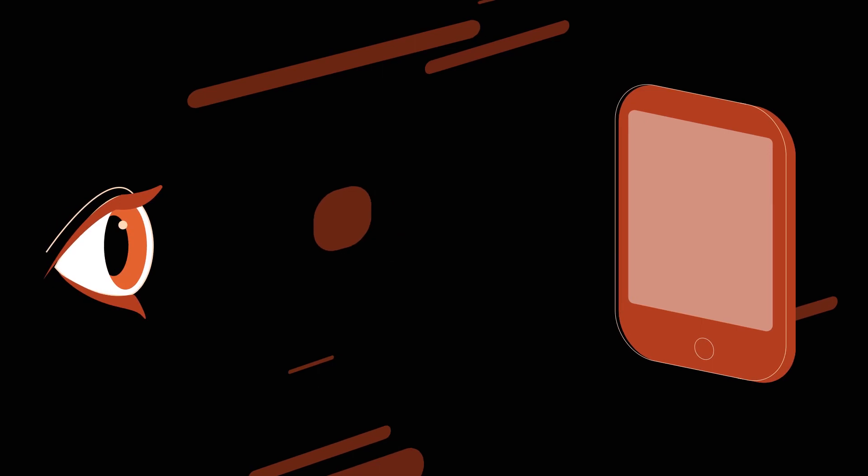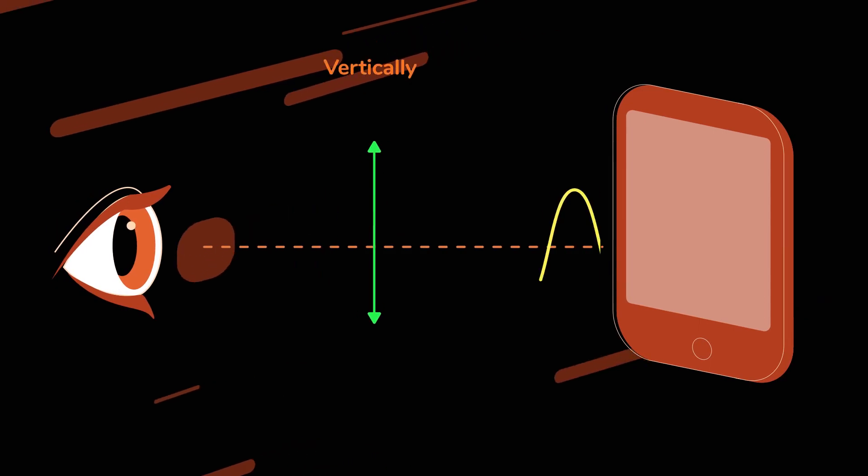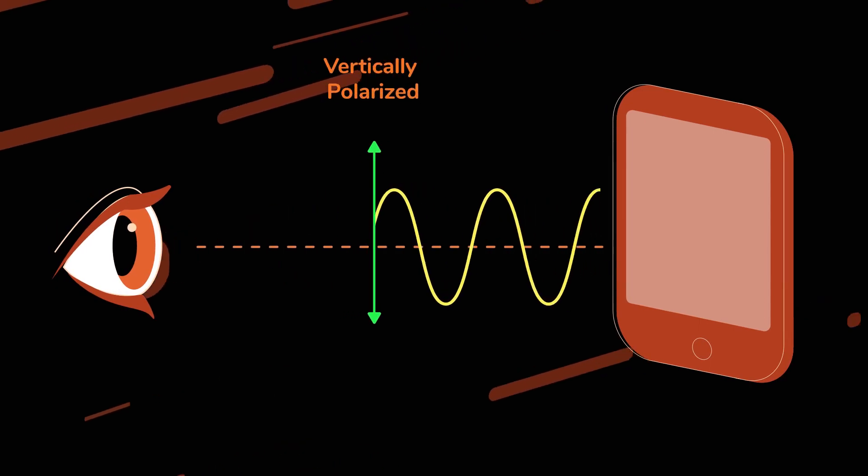If the waves have a preferred direction of oscillation, they are polarized. For example, light from your phone is vertically polarized.